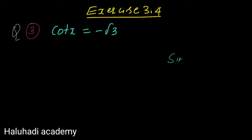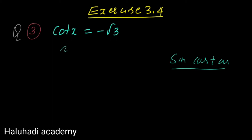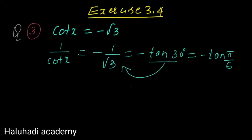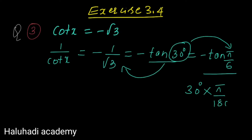Since sine, cos, tan are standard, cot can be written as the reciprocal of tan. So cot x equals 1 by tan x, which gives us minus 1 by root 3. This equals minus tan 30 degrees, which is minus tan pi by 6. From the trigonometric ratio table, tan 30 degrees equals 1 by root 3. Converting 30 degrees to radians: 30 times pi by 180 equals pi by 6.